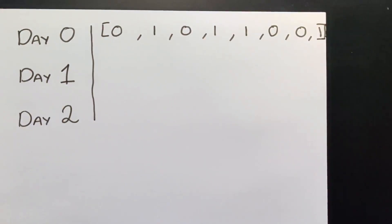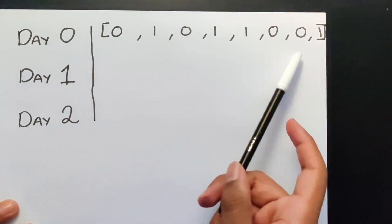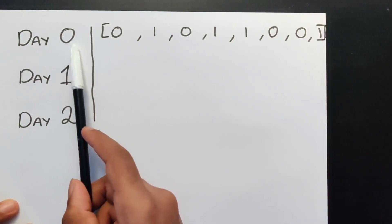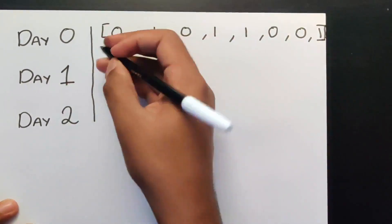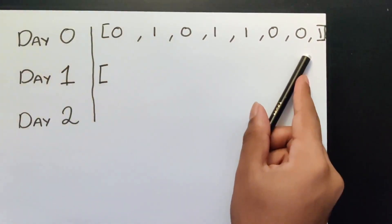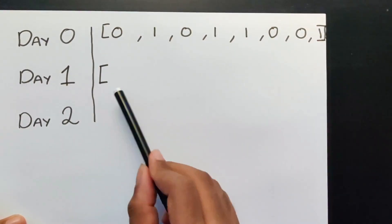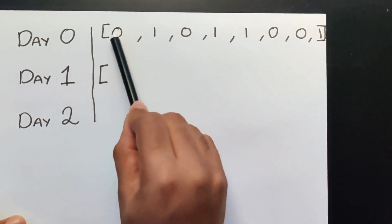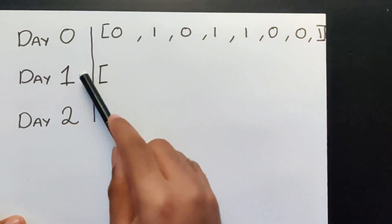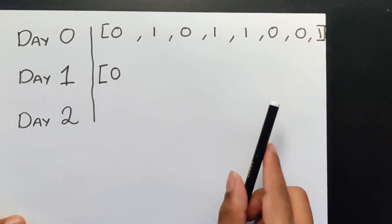Let's first visualize how this question is actually going to look like. So over here we have our eight cells, and this is how it's going to start off — this is day zero. Now let's look at how day one is going to look like. One thing we should observe is that the first and the last cells are always going to be zero, because the rules state that there have to be at least two adjacent cells. So starting from day one onwards, the first cell and the last cell are always going to be zero no matter what.